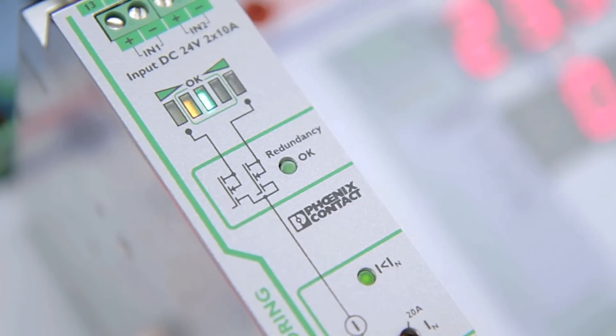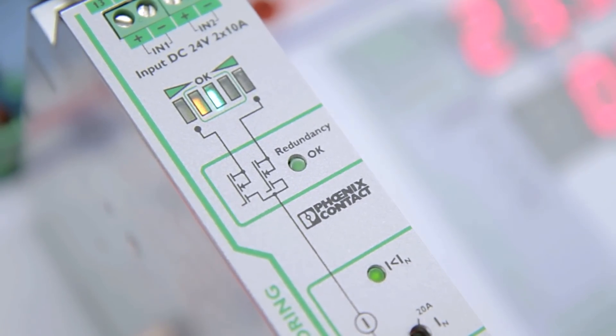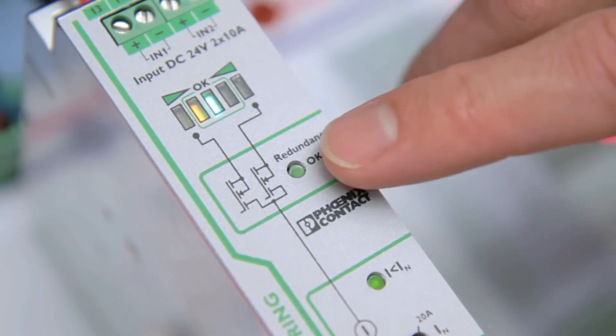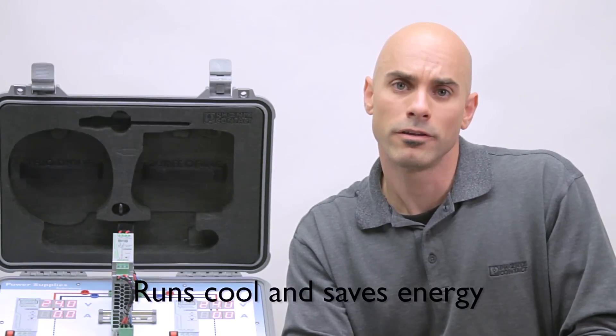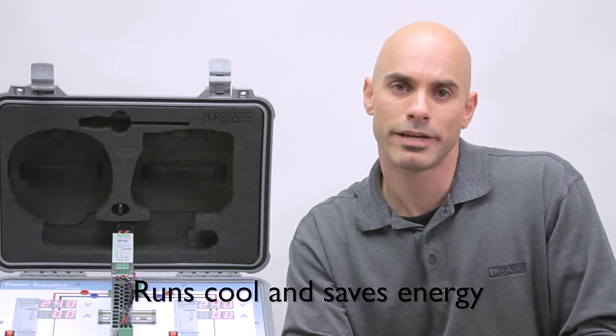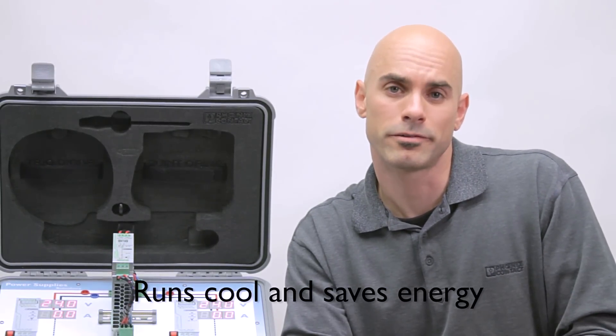You may notice that this device has no heat sink and the face of the module has a symbol for MOSFET. That's because the Quint O-Ring redundancy module is solid state and uses MOSFETs instead of standard silicone diodes for decoupling. So, with O-Ring, you will save up to 70% on the energy used, as compared to standard redundancy modules.